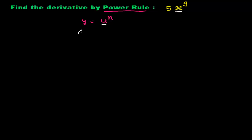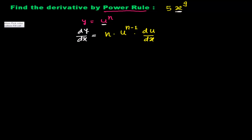The derivative dy/dx is going to be: the power n times the variable raised to the power n minus 1, times the derivative of the variable with respect to x. If you are differentiating u to the power n with respect to x, that is the formula. This formula is known as the power rule, and by using it we can very quickly find out the derivative.